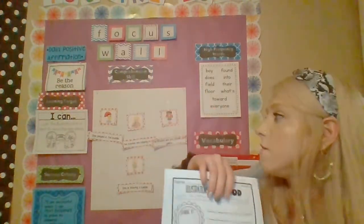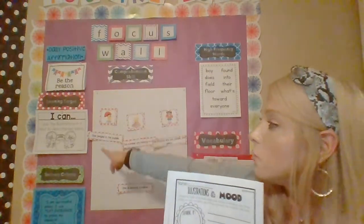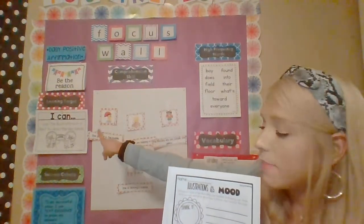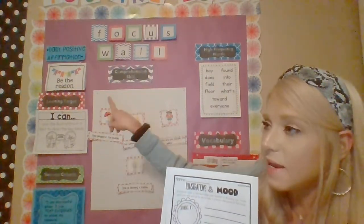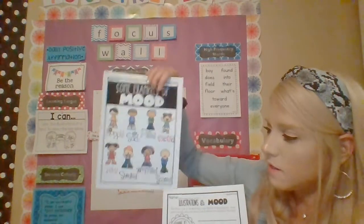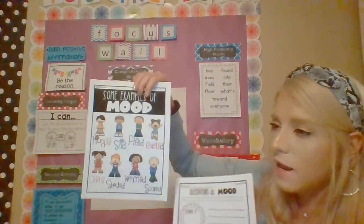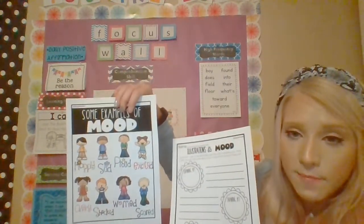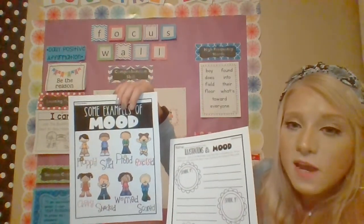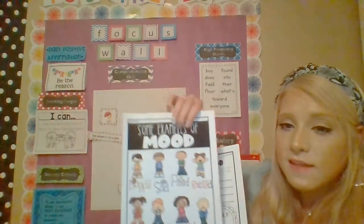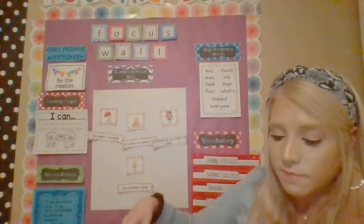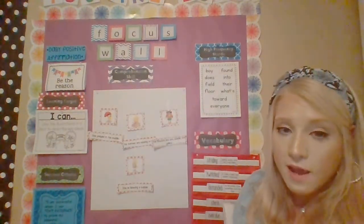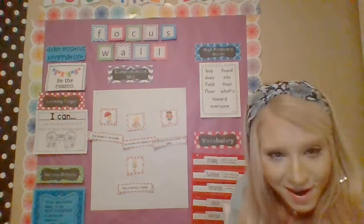Our goal today was to use illustrations in a text to describe key ideas. You're going to use these illustrations and describe the key ideas on this paper. Use text evidence — that's your success criteria. That's it for Tuesday, and I'll see you tomorrow for Wednesday reading.